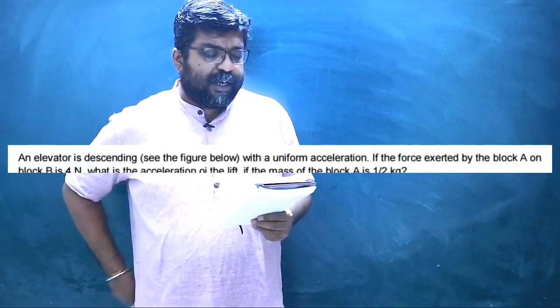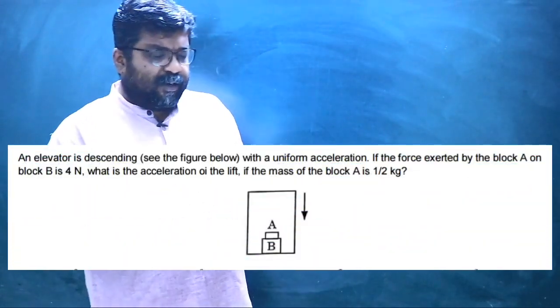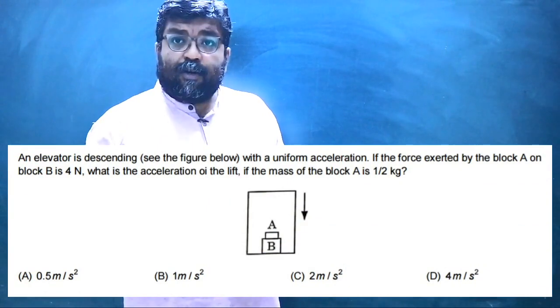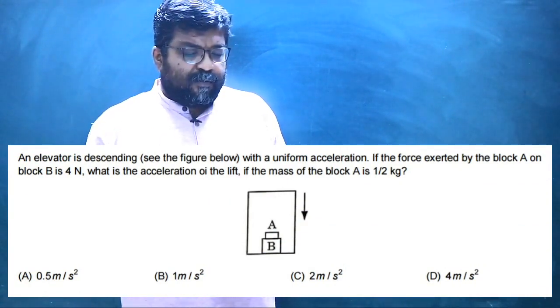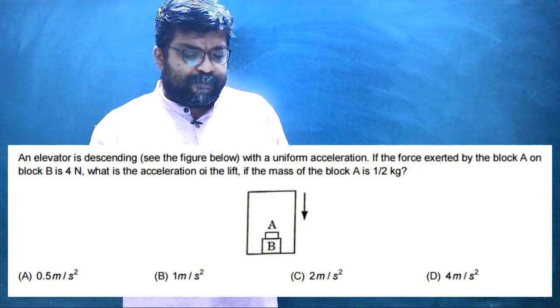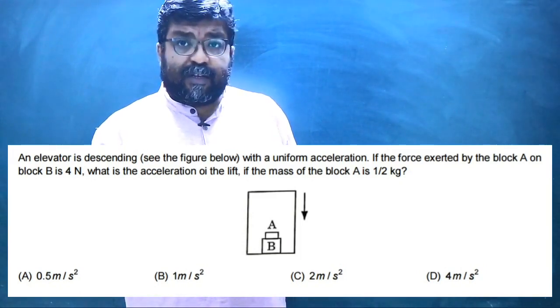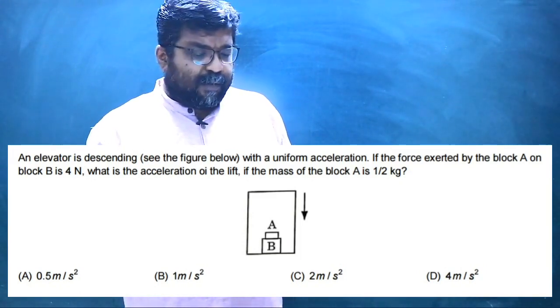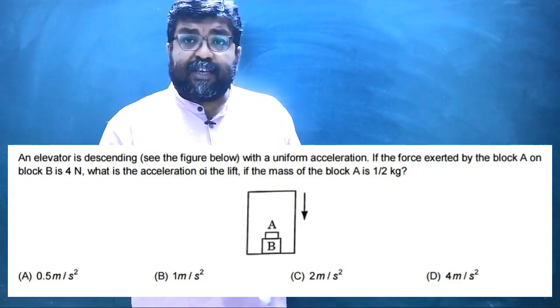In 2018, a question from the laws of motion chapter came out. The question was: an elevator is descending with uniform acceleration. The force exerted by block A on block B is 4 N. What is the acceleration of the lift, if the mass of block A is half a kilogram?